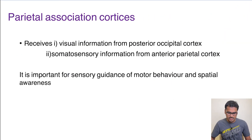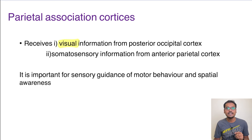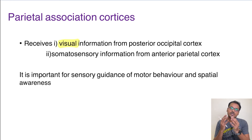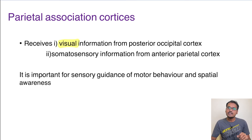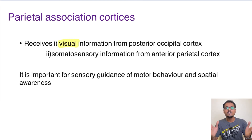The parietal association cortex receives information from two sources: visual input from the occipital cortex and somatosensory information — the position and sensation of the body carried to the somatosensory cortex in the parietal lobe. With both visual and somatosensory input, it creates spatial awareness. For example, it tells us what is on the right side of our body and where visual impulses are coming from in space. This cortex thus determines motor behavior as well as spatial awareness.